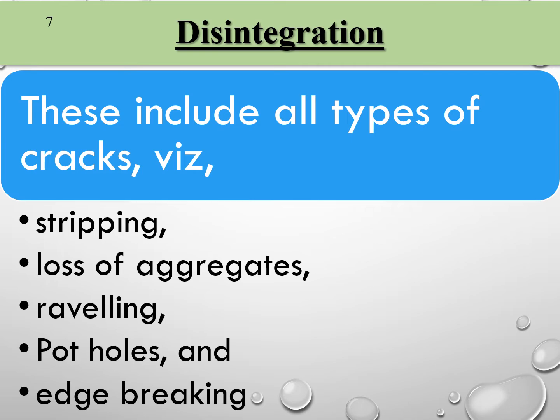The fourth distress type is disintegration, which includes stripping, loss of aggregates, raveling, potholes, and edge breaking.